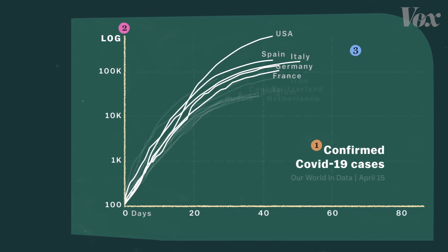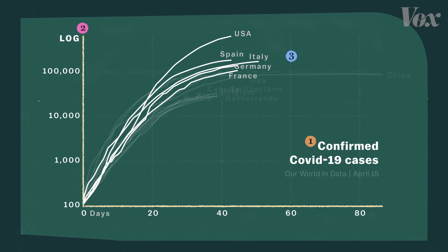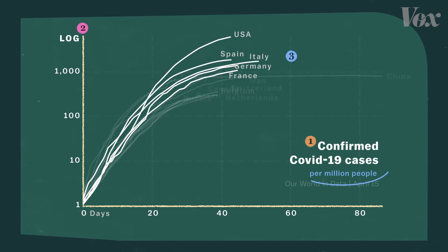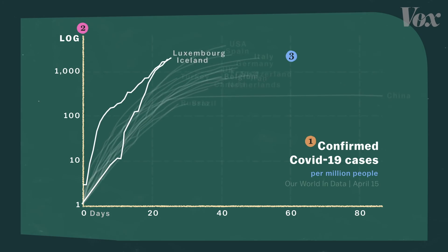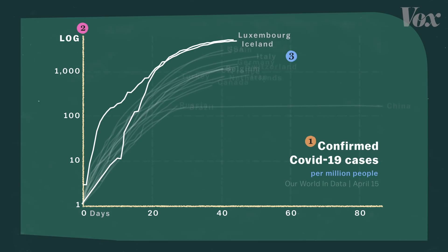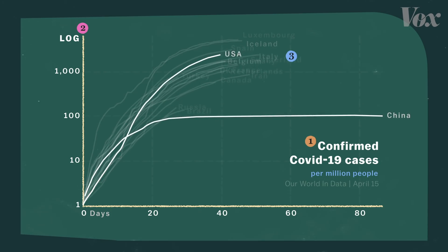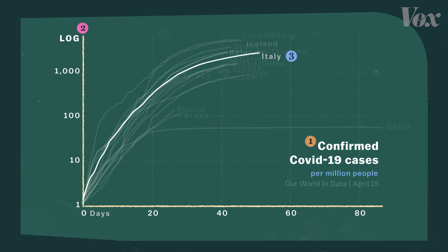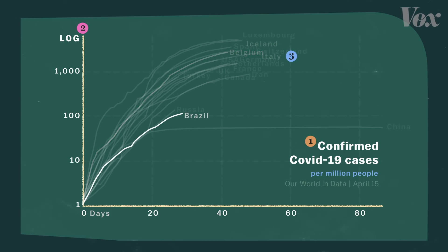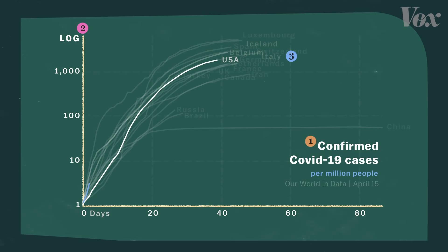Which brings us to the third thing to know about our chart: it doesn't account for population size. When you adjust for population, really small countries like Iceland and Luxembourg appear to have the biggest outbreaks for their size, which may reflect higher testing rates. The U.S. and China have much bigger populations, so their curves drop a bit. But the size of a country doesn't really affect the growth rate of its cases, and it doesn't tell us much about how much the country is struggling. It just pushes smaller countries up on the chart, and tends to hide the fact that the outbreak is especially bad in certain regions of bigger countries, like the state of New York.